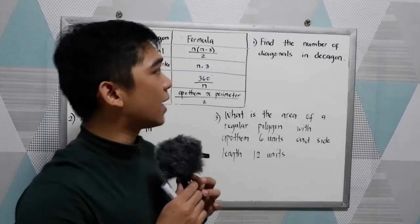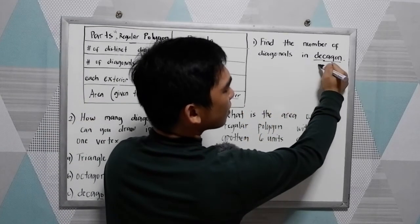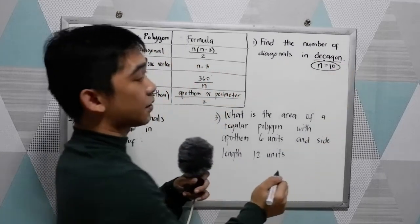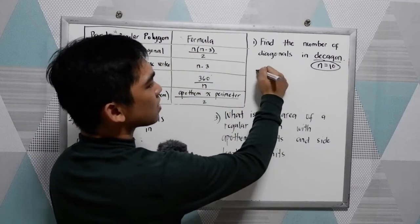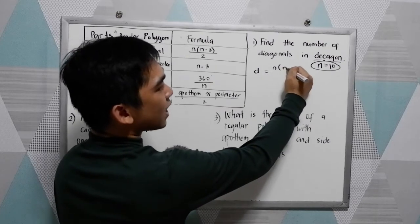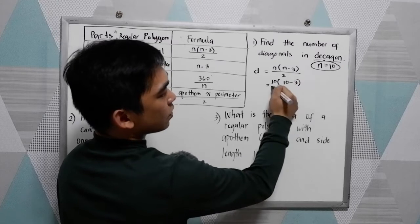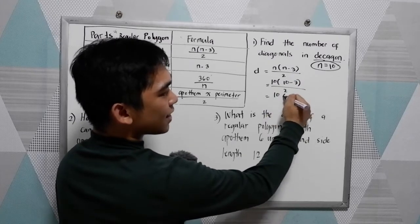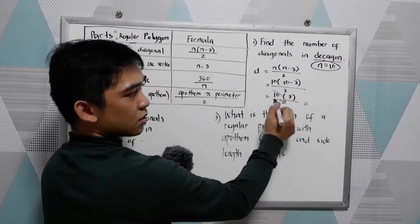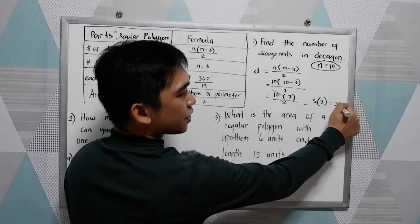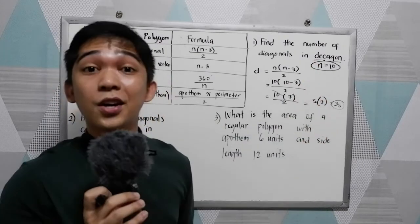Let's apply the formulas. Number 1: find the number of diagonals in a decagon. A decagon has 10 sides, so N is 10. Number of diagonals equals N times N minus 3 all over 2. Substituting: 10 times 10 minus 3, which is 7, all over 2. Using cancellation, 10 and 2 cancel to give 5 times 7, which is 35. So if you draw all diagonals in a decagon, you will come up with 35 diagonals.